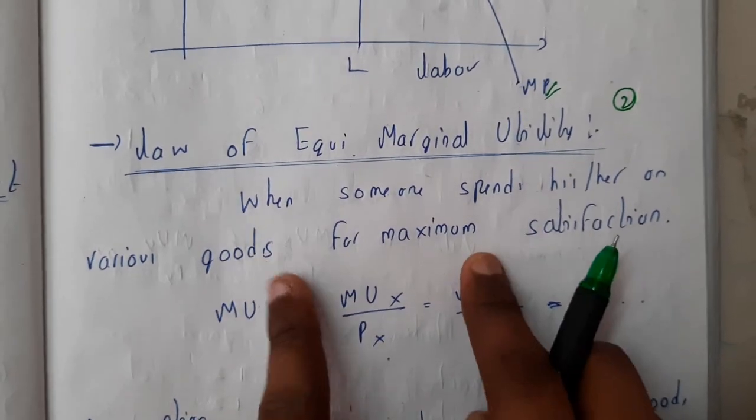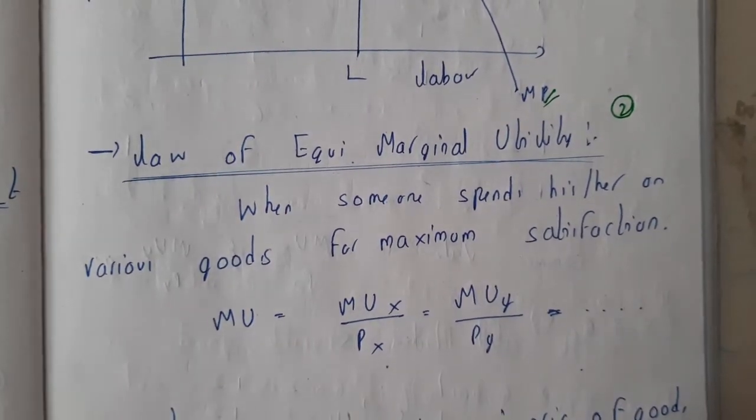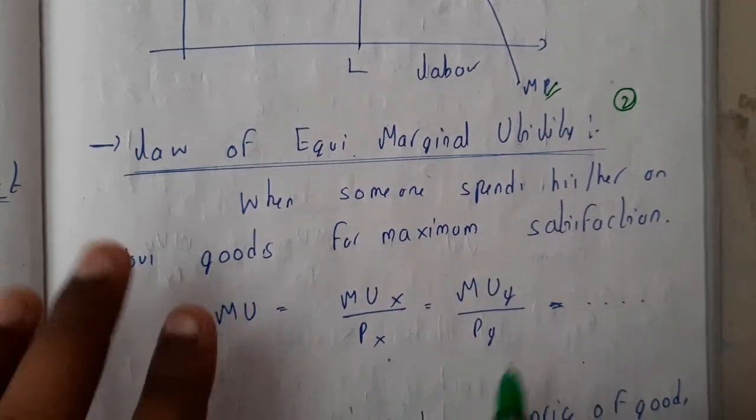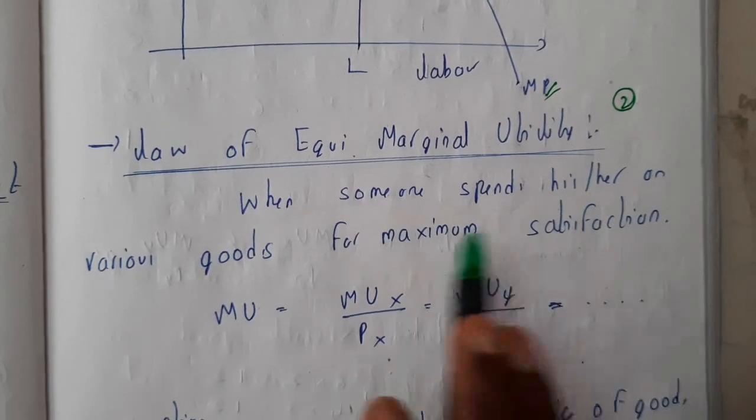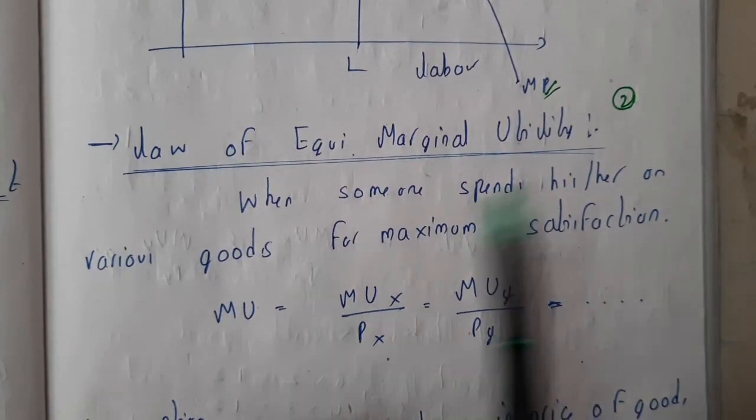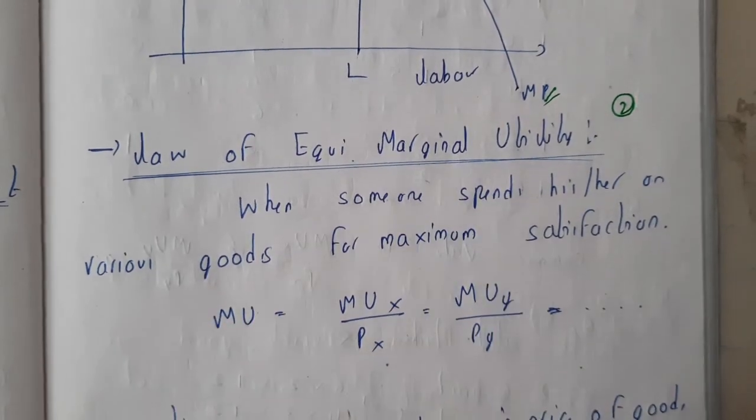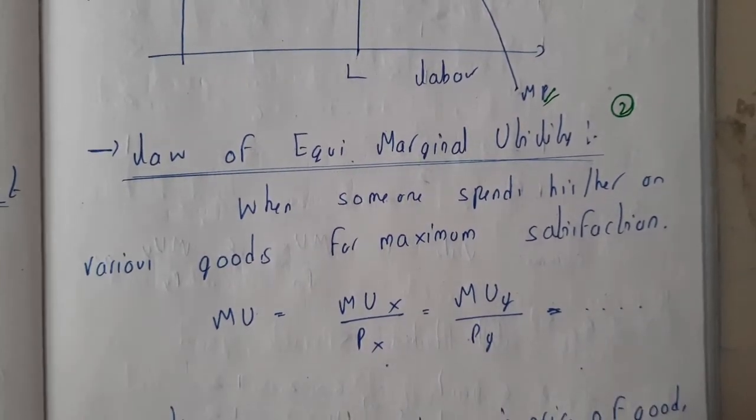We will be using a small formula. Don't worry guys, we'll explain with an example. When someone spends their money on various goods to buy them and get maximum satisfaction, how can they get maximum satisfaction at minimum cost? That is the main goal of this equi-marginal utility.